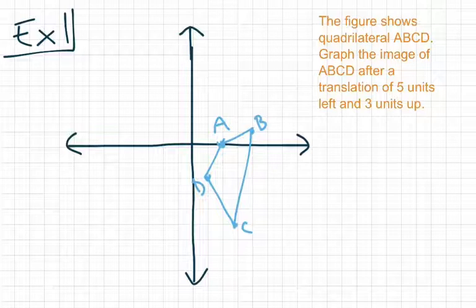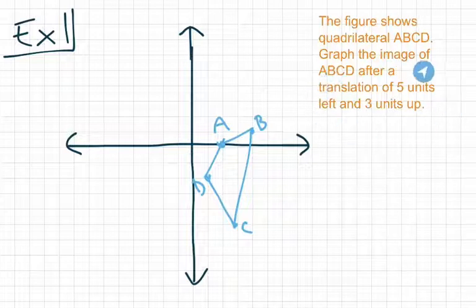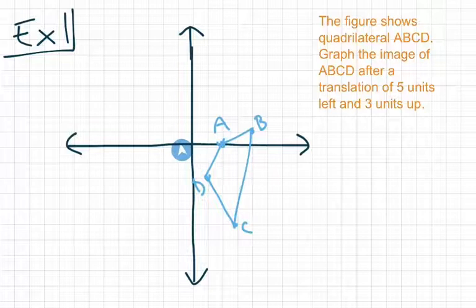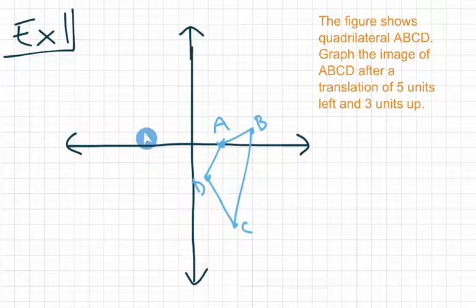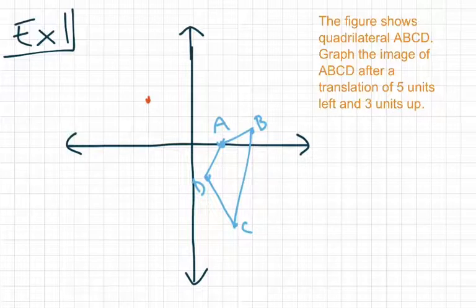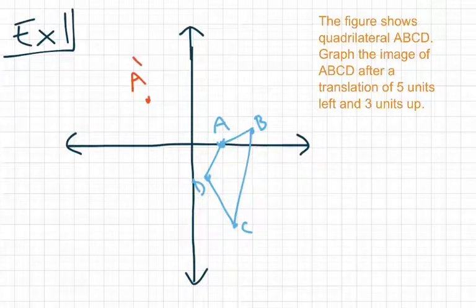So start with point A. We're going to take point A, move it five units left, and then three units up. So starting with A, we move one, two, three, four, five units to the left, and then one, two, three units up. And so that's where we put our first point. Now when we name that point, because we got that point by translating point A, we're going to name that point A prime. It's not A to the first, it's not A apostrophe, that is called A prime.